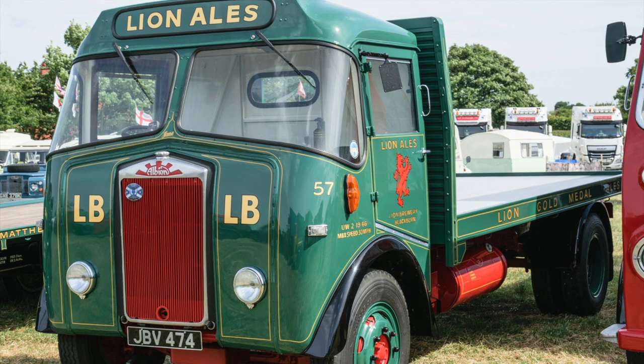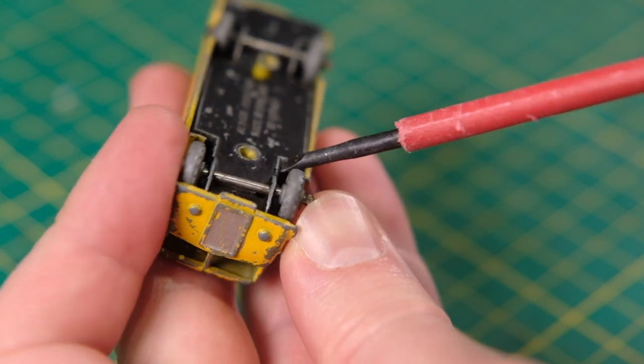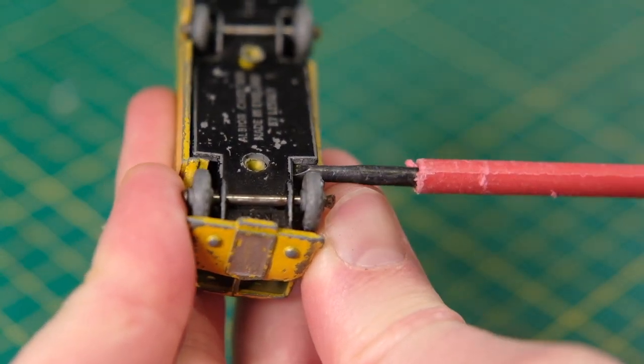This is an Albion Chieftain on which the casting is based. Later versions of the Chieftain casting had the words Blue Circle added to the Portland cement lettering on the sides of the bed.